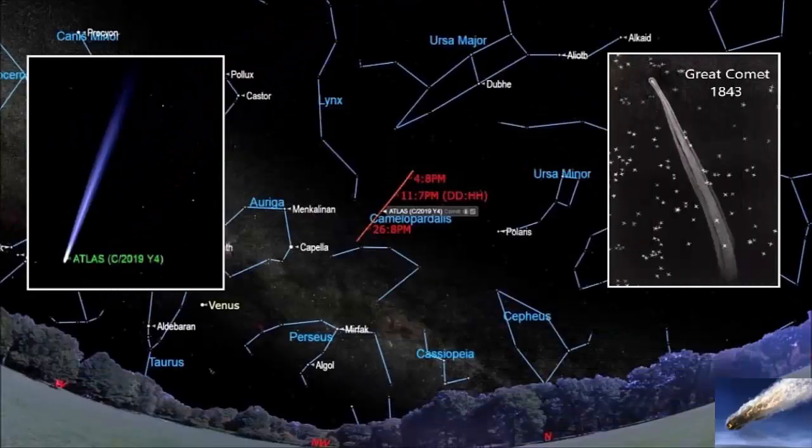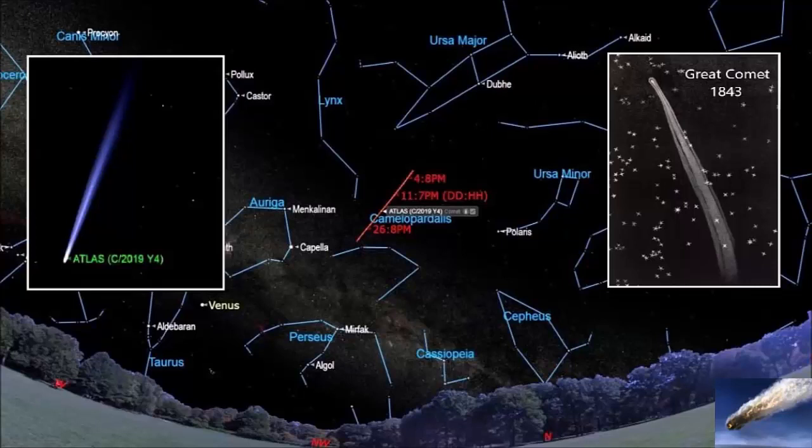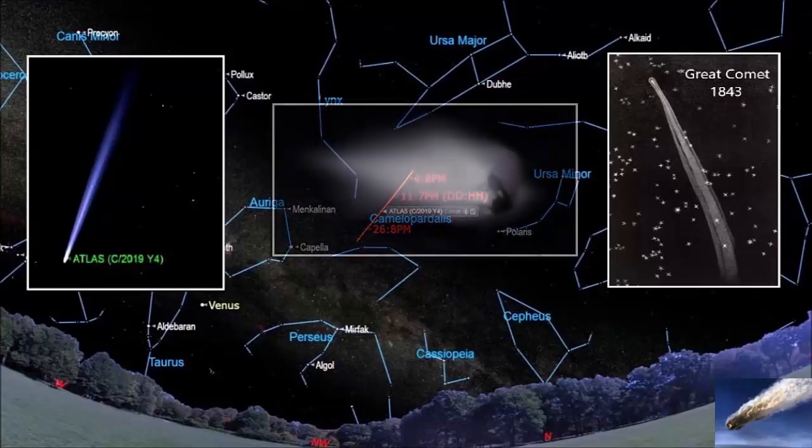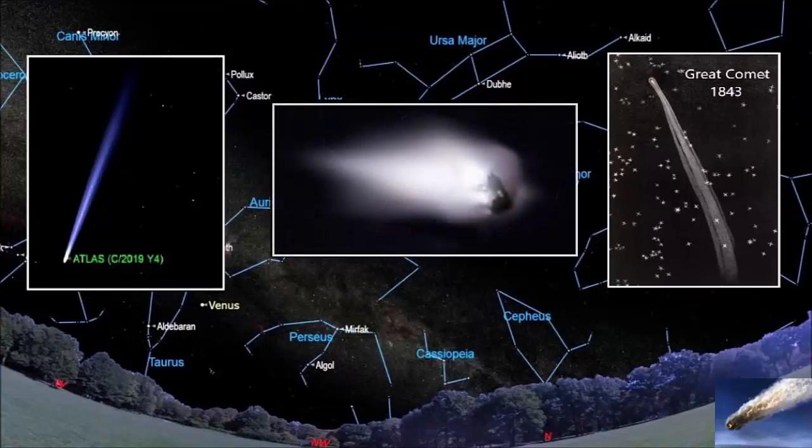There is an interesting forethought among astronomers, although speculative, that Atlas may be related to the Great Comet of the year 1843, since both comets are following a similar trajectory, and that both have separated from a larger comet that had formed in the earlier days of the solar system.